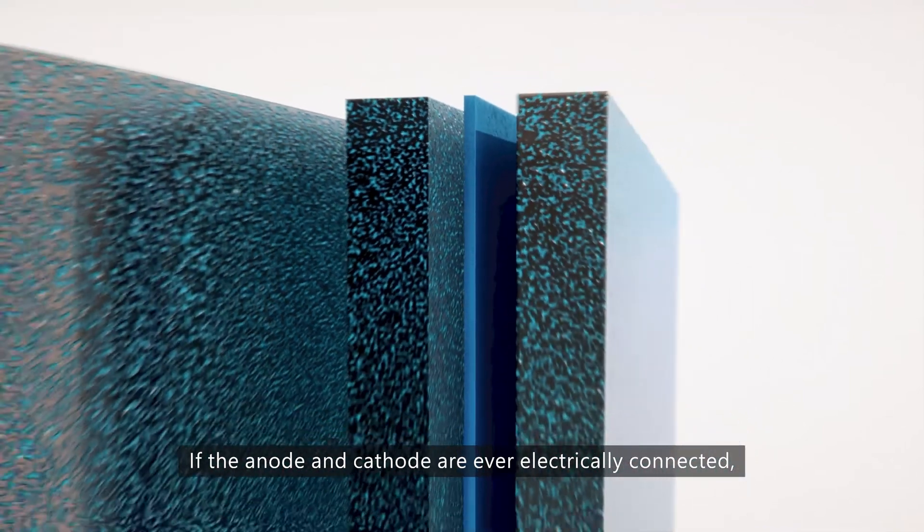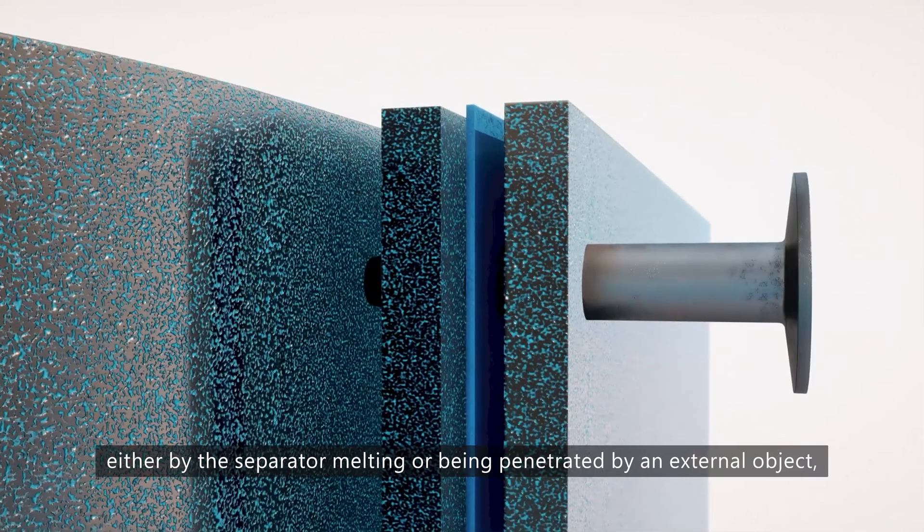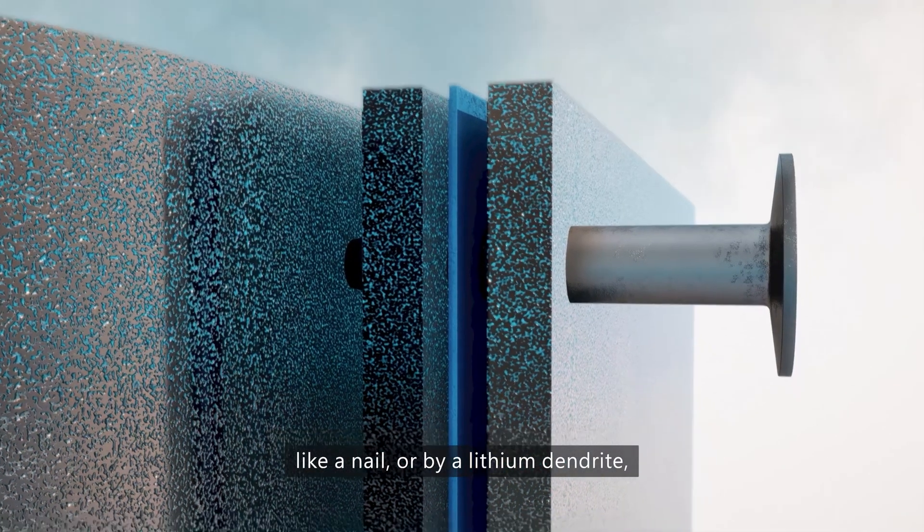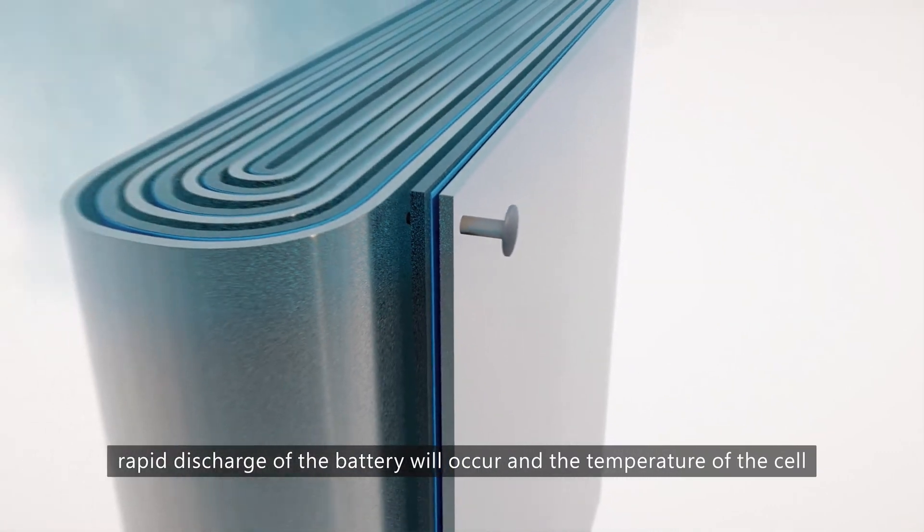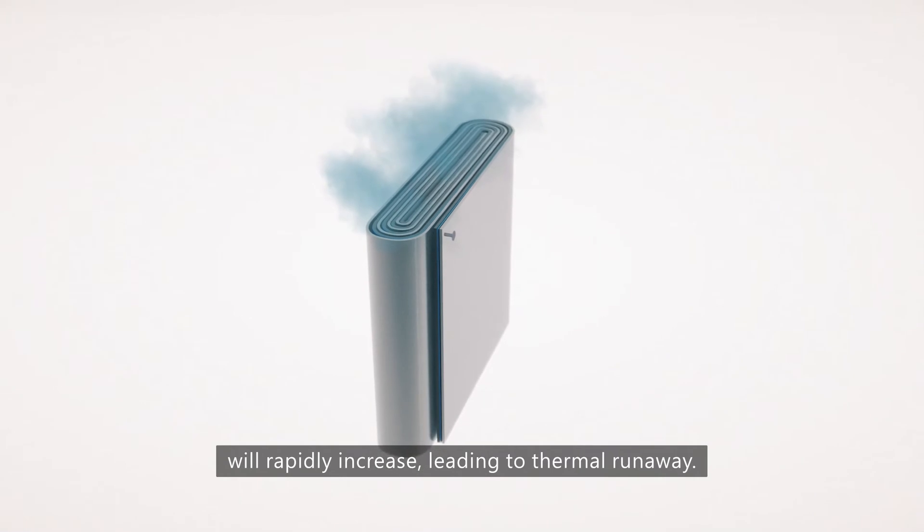If the anode and cathode are ever electrically connected, either by the separator melting or being penetrated by an external object like a nail or by a lithium dendrite, rapid discharge of the battery will occur and the temperature of the cell will rapidly increase leading to thermal runaway.